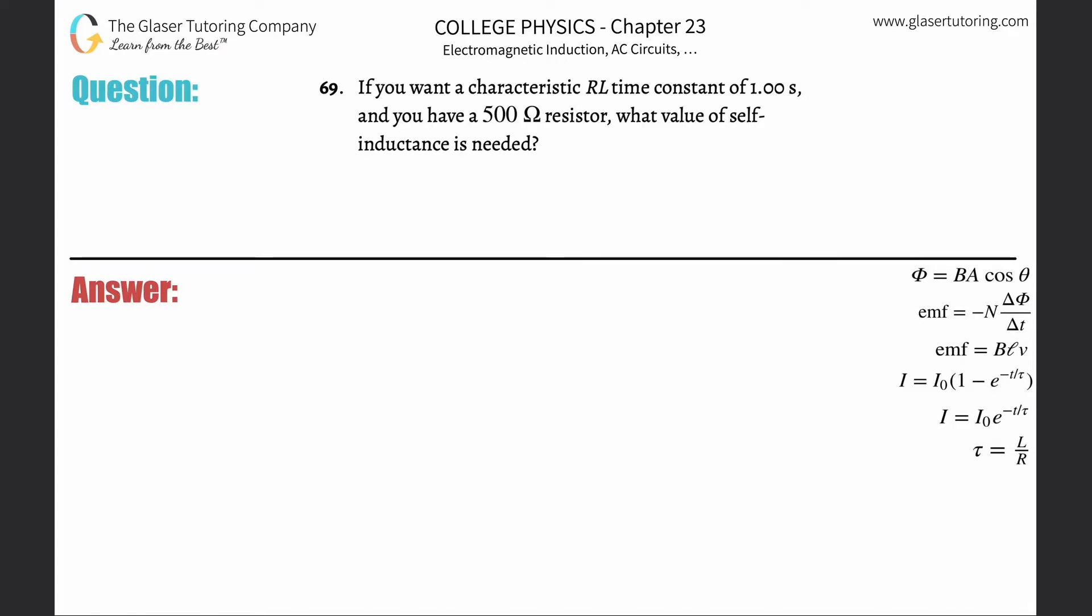Number 69. If you want a characteristic RL time constant of one second and you have a 500 ohm resistor, what value of self-inductance is needed?